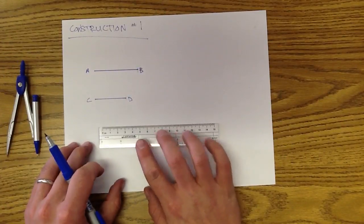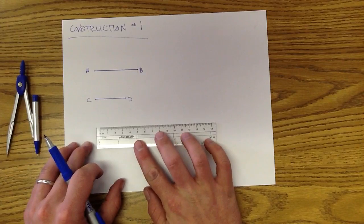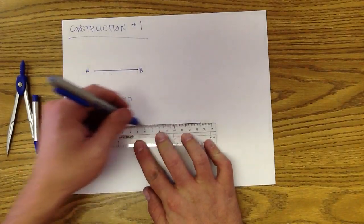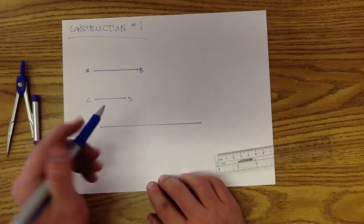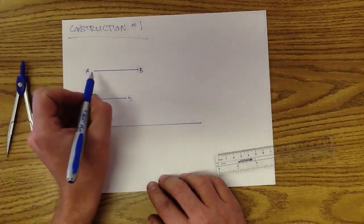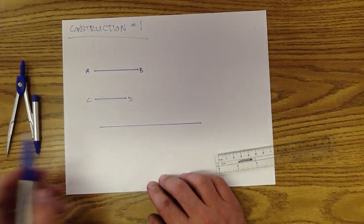Construction one basically is doing this. If you have some line segment, or if you just have some arbitrary line, you've got a length down here. If I want to construct, say, another segment identical to AB, this is what it's going to look like.